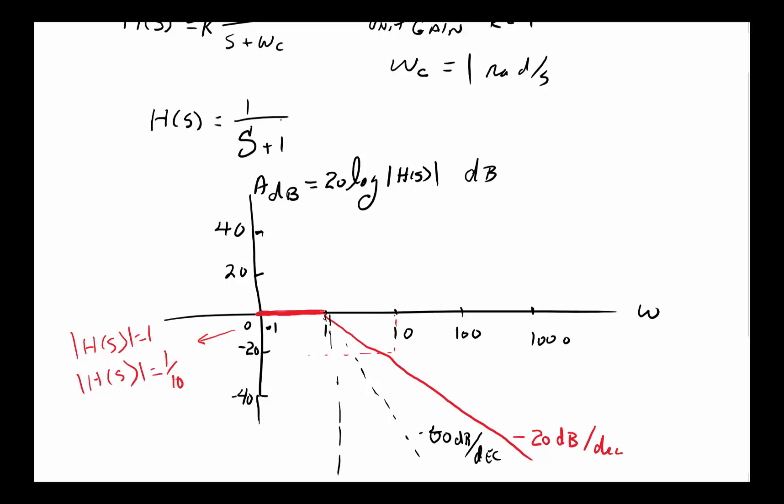This filter, as it stands, is called a first-order filter. There's only one root at the bottom.